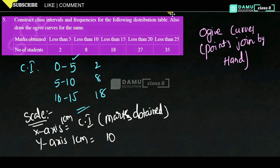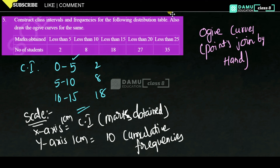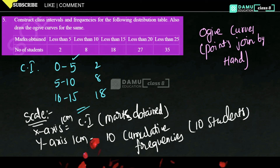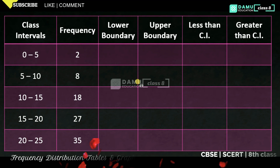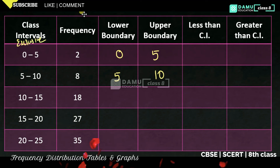On the y-axis we are going to take 10 cumulative frequencies, or 10 students per unit. Before plotting, we need to find the lower boundaries and upper boundaries. In exclusive class intervals, the lower boundary equals the lower limit and the upper boundary equals the upper limit. So for 0–5: lower boundary is 0, upper boundary is 5; for 5–10: lower boundary is 5, upper boundary is 10, and so on up to 20–25.